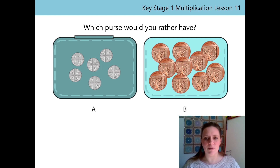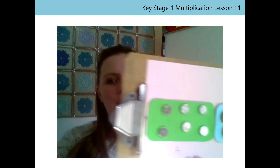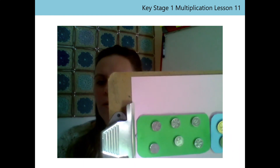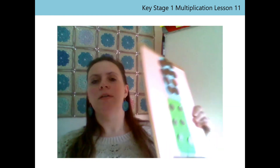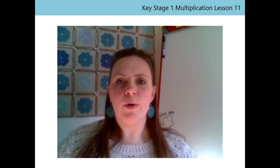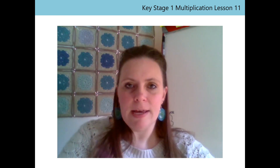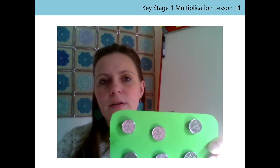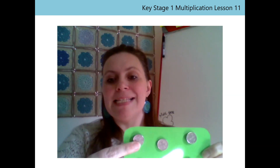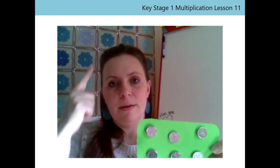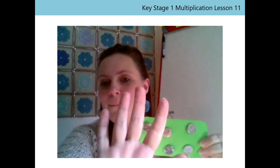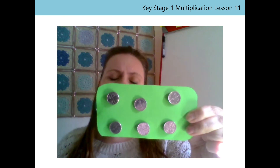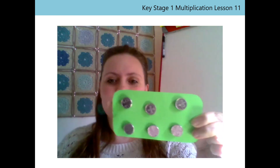Okay, let's go through the problem together. As we work out which purse we'd rather have, I think we should look at Purse A first. Did you notice which coins were in Purse A? That's right, they're 5p coins. Remember, I see 5p, but I think 5, 1 penny. How many coins are in here altogether? That's right, there's 6.